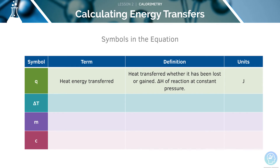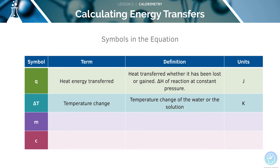Next, we'll look at delta T. We know that this is the temperature change — defined as the change of the water or solution — and it's measured in Kelvin. Next, we'll look at mass. This is the mass of the substance undergoing the temperature change, and it will be measured in grams.